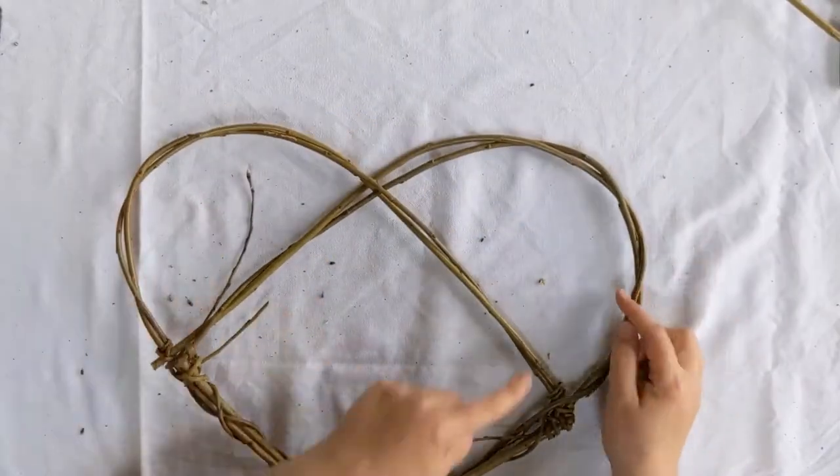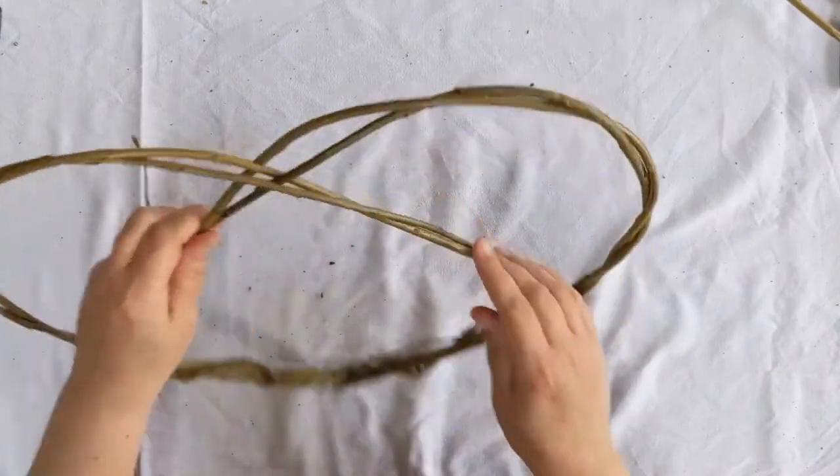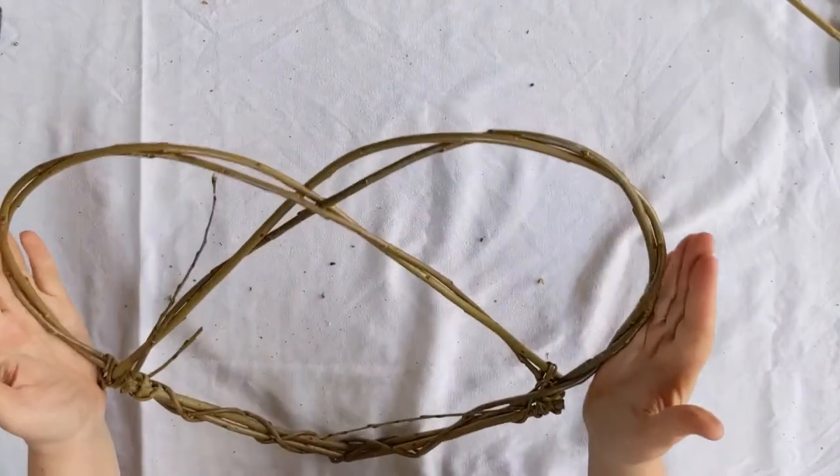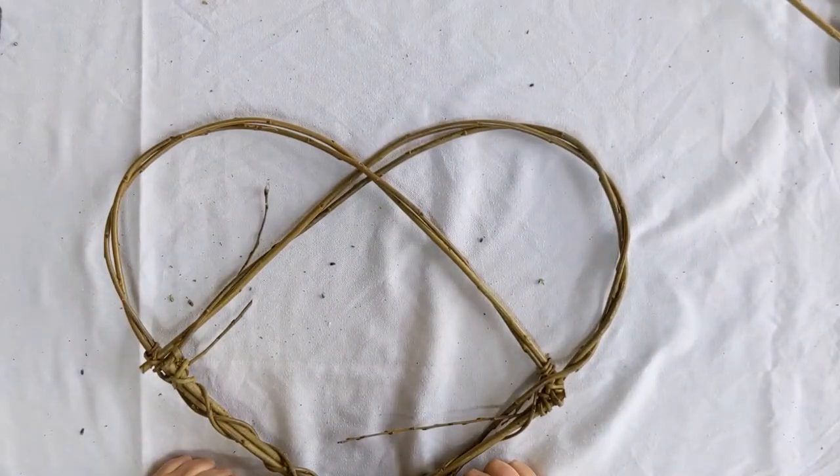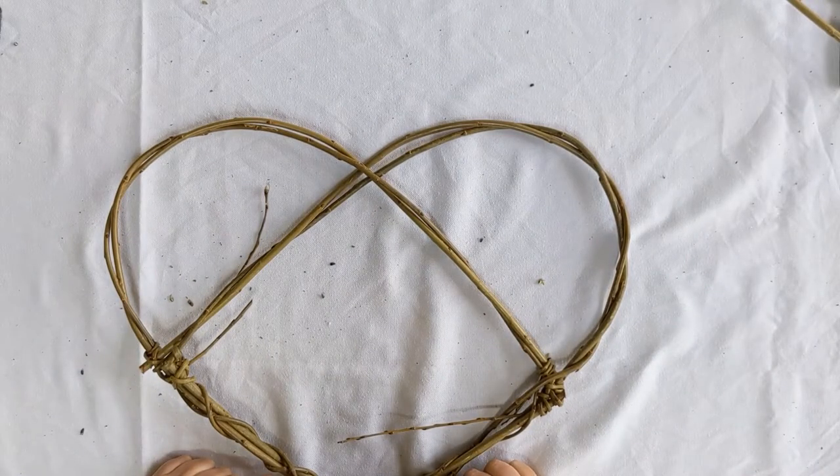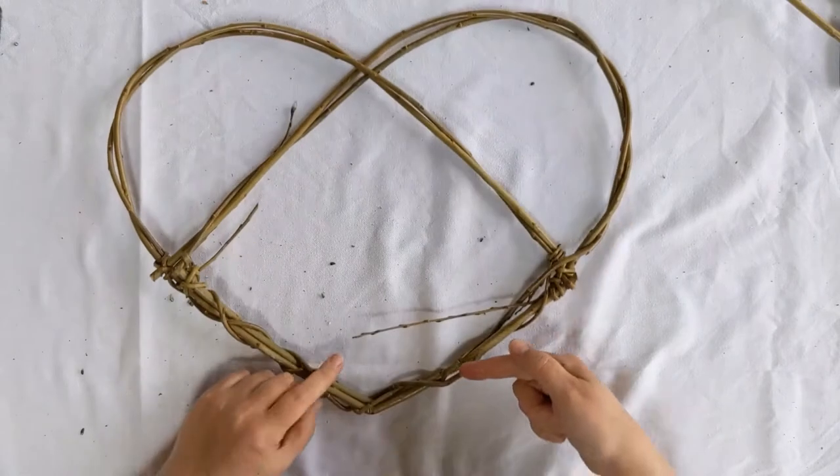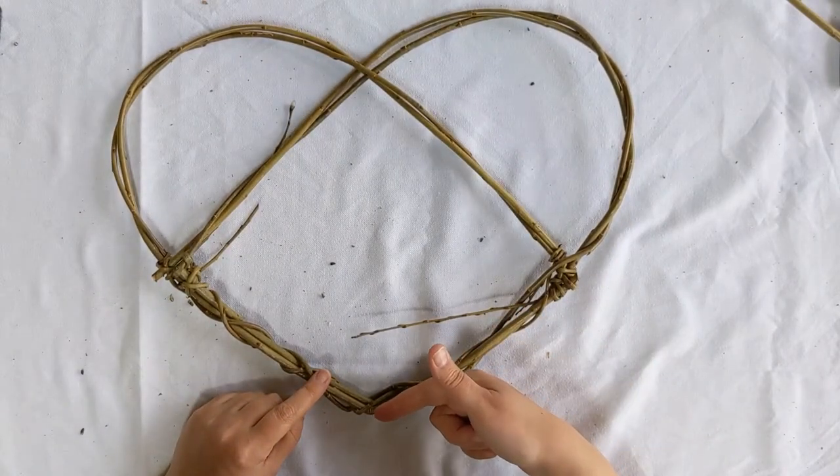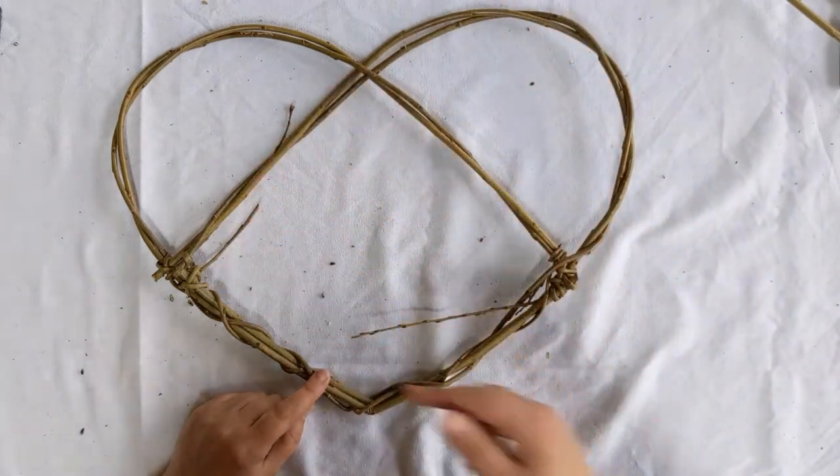So now you've got your two D's reinforced. At this point you can kind of manipulate it so it's looking as equal as it can do. Then we're going to add another one, sliding it into the bottom point of your heart and we're going to wrap that around as well.